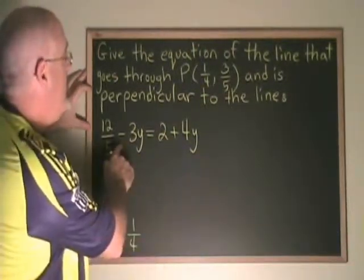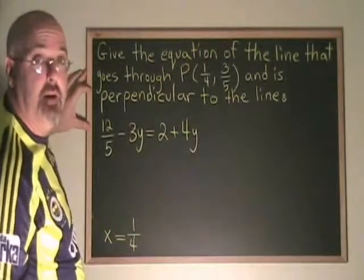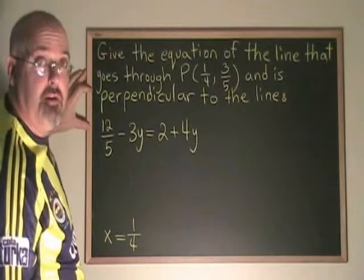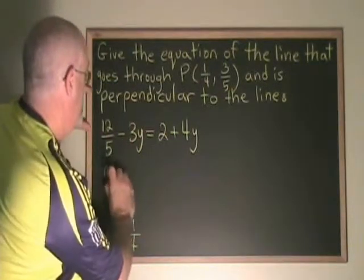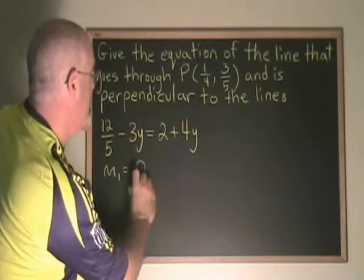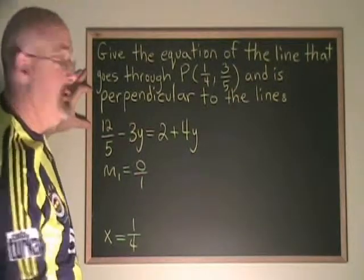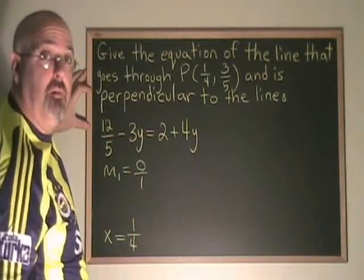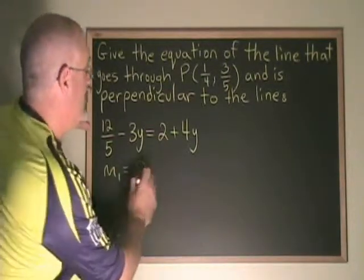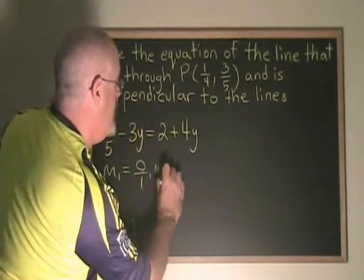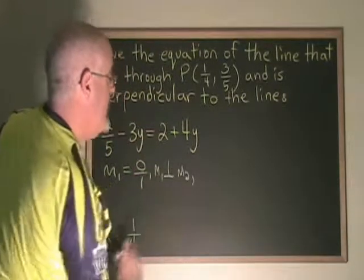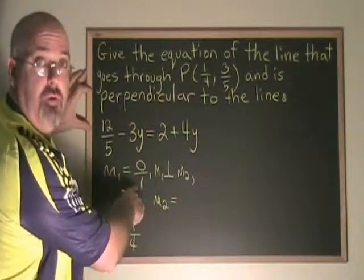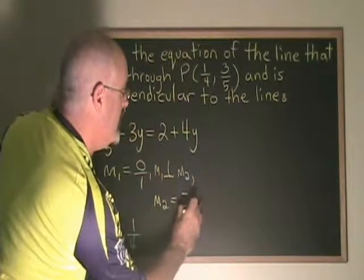We know that the slope of any horizontal line has to be 0. And the easiest way to express the number 0 in the form of a fraction is 0 over 1. So assuming that its slope is 0 over 1, we can proceed in the same way that we do with an oblique line. Now, M1 equals 0 over 1. M1 is perpendicular to M2. Therefore, M2 must be equal to the negative reciprocal of 0 over 1, which is negative 1 over 0.